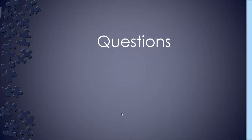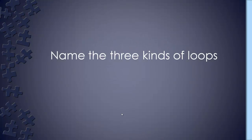Review question: name the three kinds of loops we discussed. Answer: do-while, while, and for.